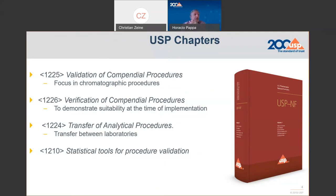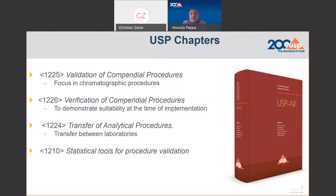Then we introduced another chapter, 1226, Verification of Compendial Procedures. This is guidance on how to demonstrate the suitability at the time of implementation in the lab, and refers specifically to pharmacopoeial procedures. Latest, we introduced 1224, Transfer of Analytical Procedures. This chapter is focused on the transfer between laboratories. We usually say that if the method is in the pharmacopoeia, the appropriate activity will be verification rather than transfer.